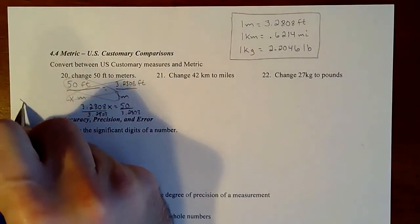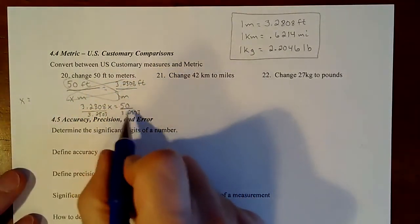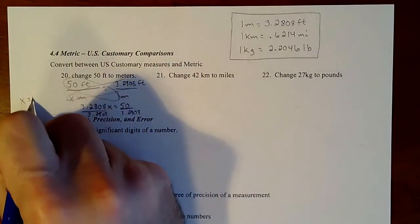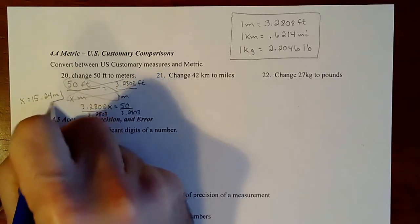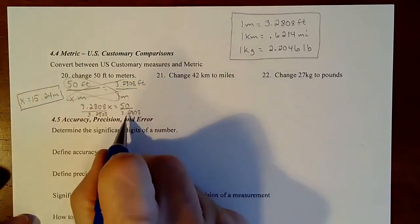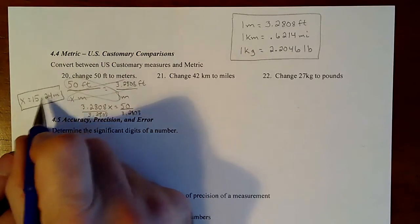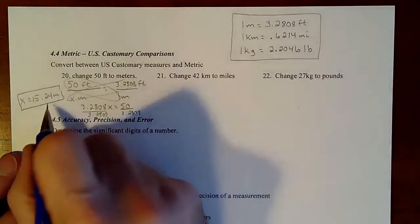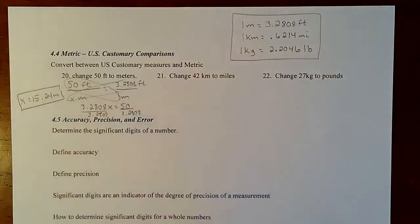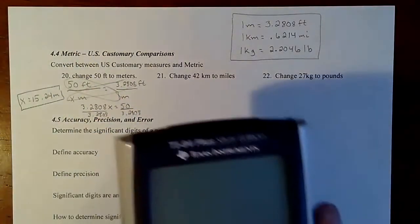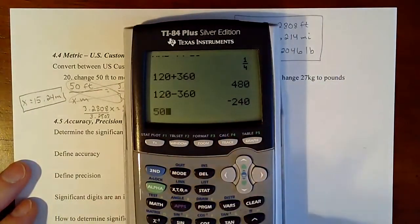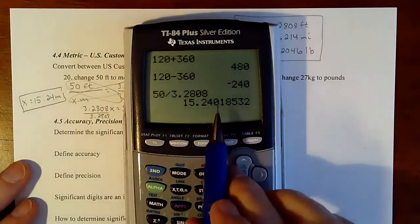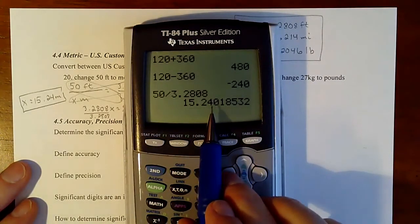Alright, and then when I get that, I take 50 divided by that and it turns out to be 15.24 meters. And then just to double check where the directions want you to round to. If they were asking for two decimal places, we would go out to three decimal places to see what the answer is. So if we take 50 divided by 3.2808, that zero is not going to do anything to the four. So it's 15.24.